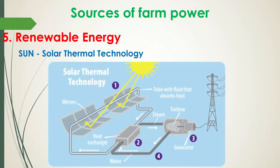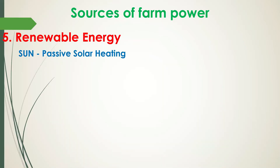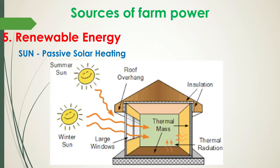The third way to use the sun as an energy source is passive solar heating. Passive solar heating is as simple as letting the sun shine on an object. Have you ever noticed how sunlight can make your body warmer, even on a cold day? If so, you've experienced passive solar heating in action.